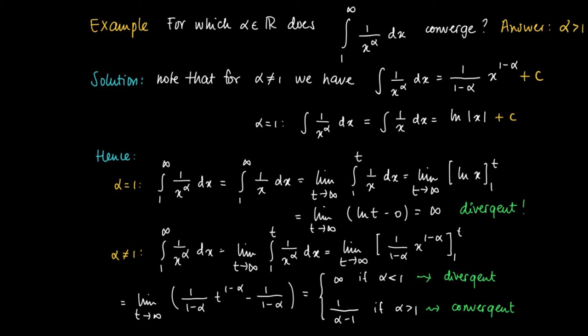So as an answer, we find that alpha should be larger than 1 in order to have an existing improper integral from 1 to infinity of the function 1 over x to the power alpha dx.